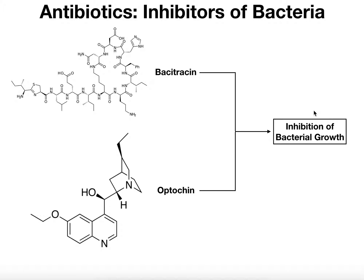In general, they're going to inhibit bacterial growth by usually one of two mechanisms. They're either going to directly kill the bacteria — that's called being bactericidal — or they're just going to inhibit the growth, basically slow them down but not kill them. That's called being bacteriostatic. The point is to understand what the antibiotics do: they're designed to slow down or kill bacteria.